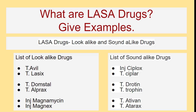What are LASA drugs? Give examples. LASA drugs are Look-Alike and Sound-Alike drugs. Examples of look-alike drugs are Tablet Avil and Tablet Lasix, Tablet Domstall and Tablet Alprax, Injection Magnamycin and Injection Magnex. Examples of sound-alike drugs are Injection Ziproc and Tablet Ziproc, Tablet Trotin and Tablet Trophil, Tablet Ativan and Tablet Atrax.